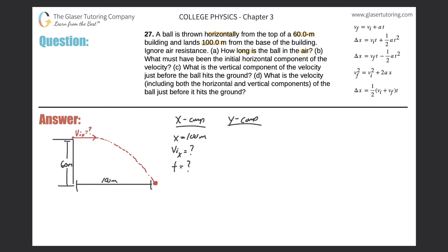The y displacement will be negative 60 meters — we start high and end low, so it has to be negative because the final value is less than the initial, and it's always final minus initial. We also know that the initial velocity in the y direction is zero; there is no y component to this vector at all. There will be some final y velocity, but I don't know that yet. The acceleration in the y direction is negative 9.80 meters per second squared due to gravity.